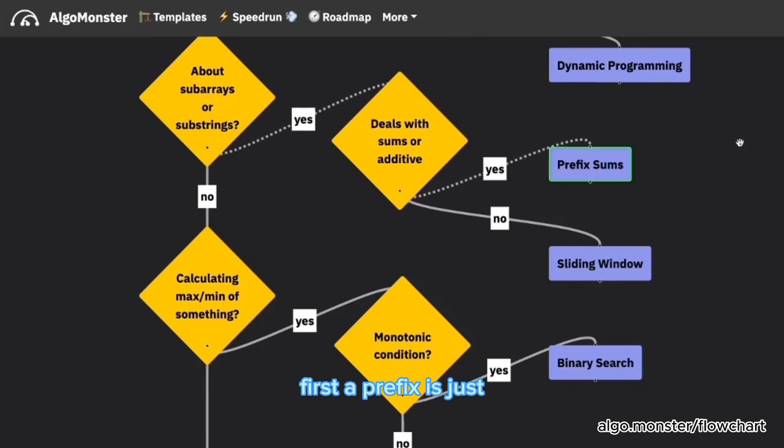So essentially, first a prefix is just a sub array that starts from the beginning of the array. And a prefix sum technique here is just calculating the sum of every single prefix of the array. And the reason why this is useful is because if you compute all the sums of every prefix, you can calculate the sum of every single sub array in constant time. You can look at our article here. But this technique is pretty useful. However, it's not that common. If a problem involves sub arrays or substrings, typically you would want to consider the sliding window approach.